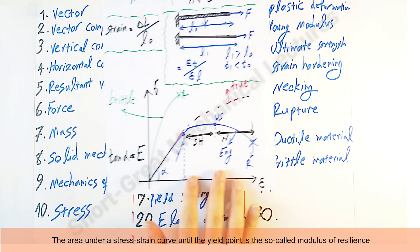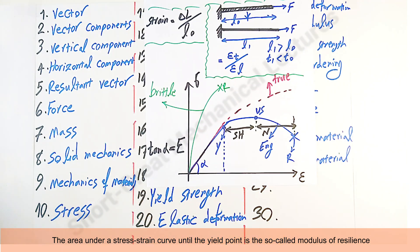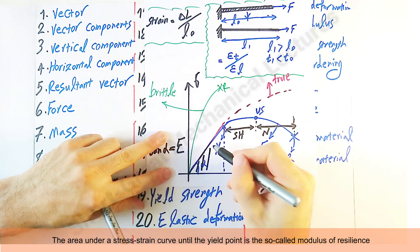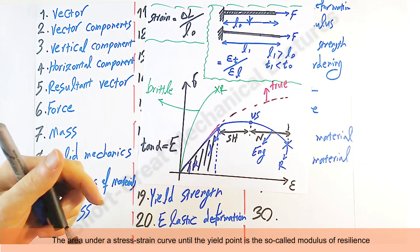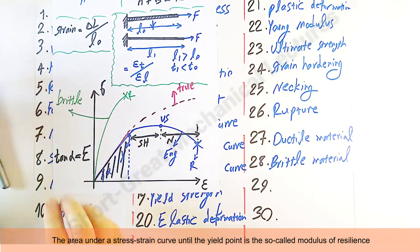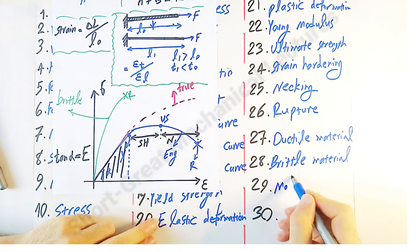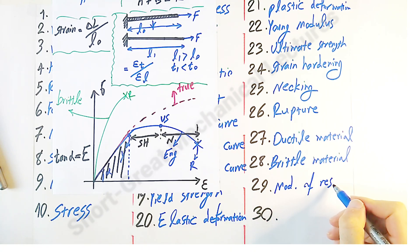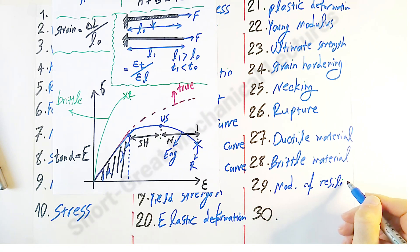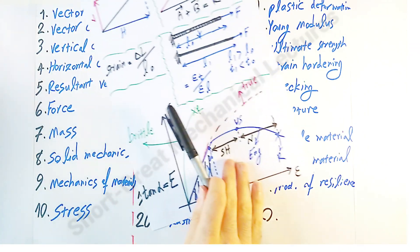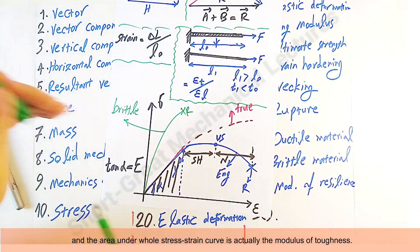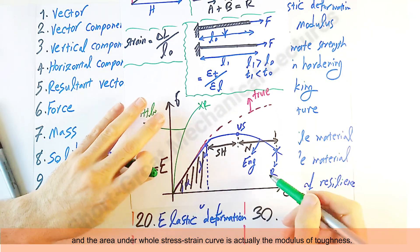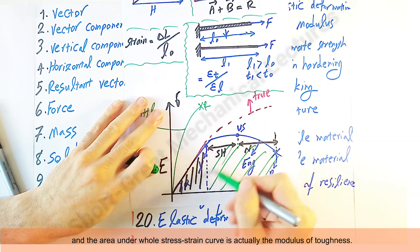The area under the stress-strain curve until the yield point is the so-called 'modulus of resilience.' And the area under the whole stress-strain curve is actually the 'modulus of toughness.'